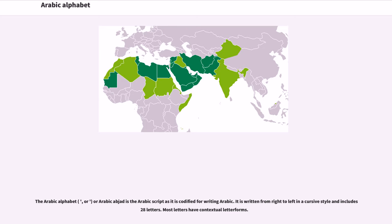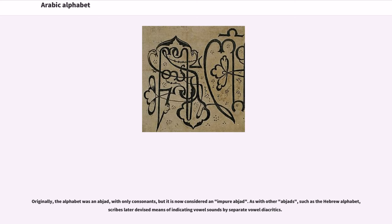The Arabic alphabet, or Arabic abjad, is the Arabic script as it is codified for writing Arabic. It is written from right to left in a cursive style and includes 28 letters. Most letters have contextual letter forms. Originally the alphabet was an abjad with only consonants, but it is now considered an impure abjad. As with other abjads such as the Hebrew alphabet, scribes later devised means of indicating vowel sounds by separate vowel diacritics.